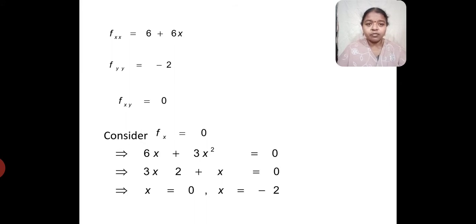Next, to find the extreme values, the conditions which we would be using are fx equal to 0 and fy equal to 0. When I put fx equal to 0, I get 6x plus 3x squared equal to 0, out of which 3x is common, so it is 3x times (2 plus x) equal to 0. When I simplify this, I get x equal to 0 and x equal to minus 2.